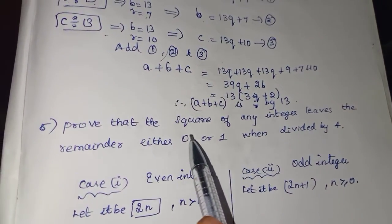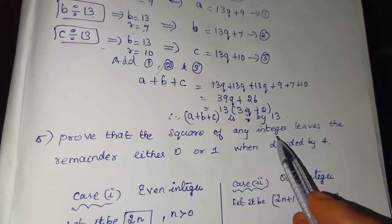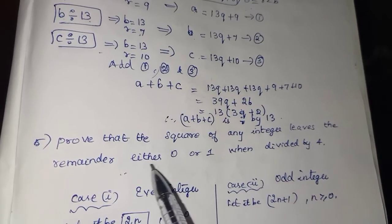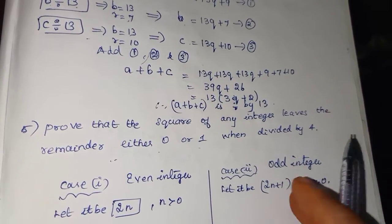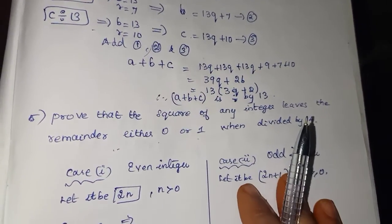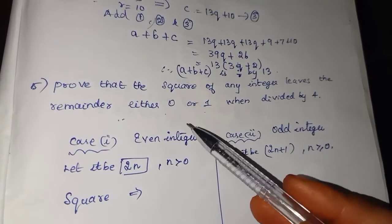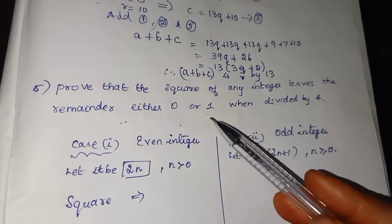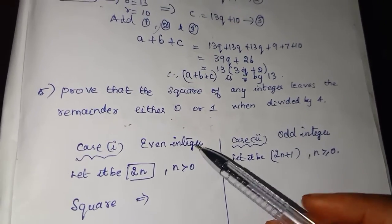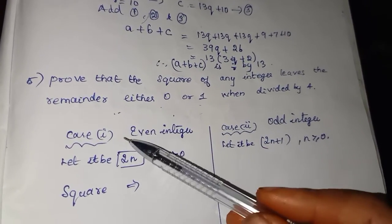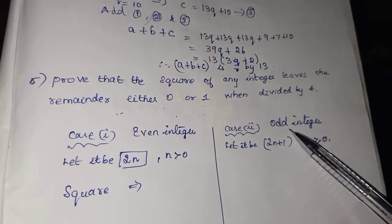Next, 5th sum: prove that the square of any integer leaves the remainder either 0 or 1 when divided by 4. We are dividing into two cases, because any integer can be even as well as odd.